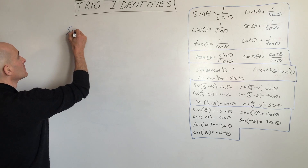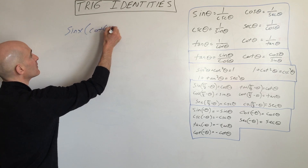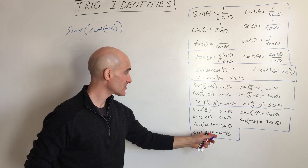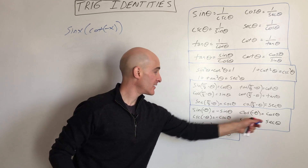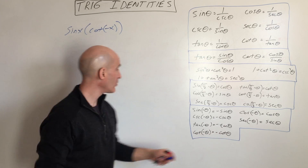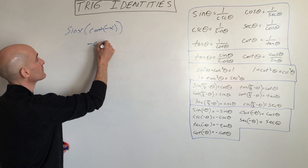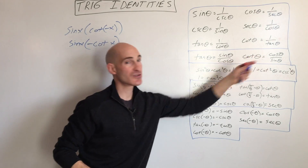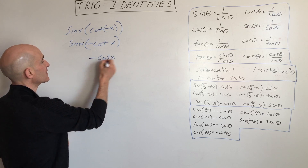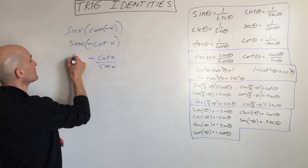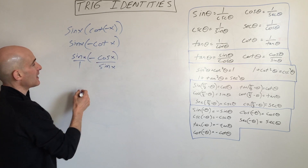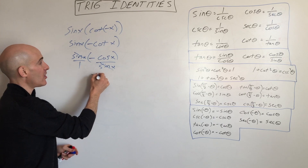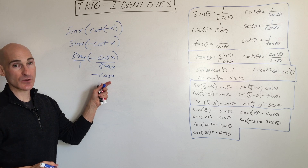Let's simplify sine of x times cotangent of negative x. We have a negative angle, so we use the even and odd identities: cotangent of negative theta equals the opposite of cotangent of theta. So this becomes negative cotangent of positive x times sine of x. Cotangent is cosine over sine, giving us negative cosine x over sine x times sine x. The sine x in the numerator and denominator cancel, leaving negative cosine of x.